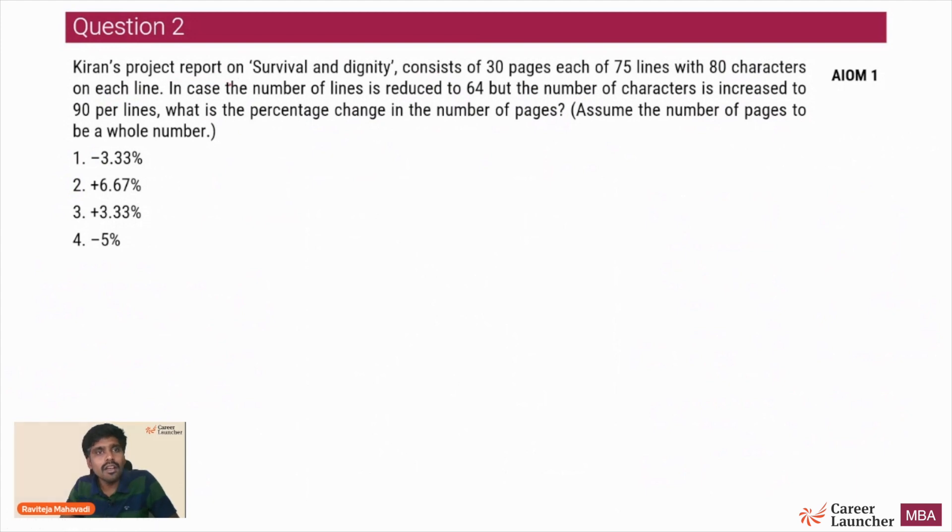Let's look at question 2. Kiran's project report on survival and dignity consists of 30 pages, each of 75 lines and 80 characters. So the entire report is 30 into 75 into 80. In case the number of lines is reduced to 64 and number of characters is increased to 90, what is the percentage change in the number of pages? So the total work - 30 into 75 into 80 - is now 64 into 90 into x pages. Now 64 and 80 are 4 is to 5, and 75 and 90 are 5 is to 6.